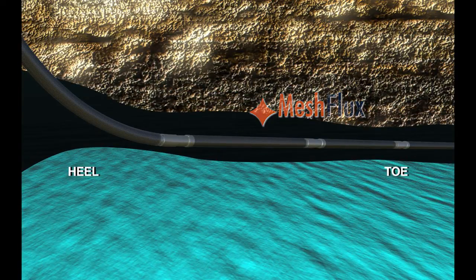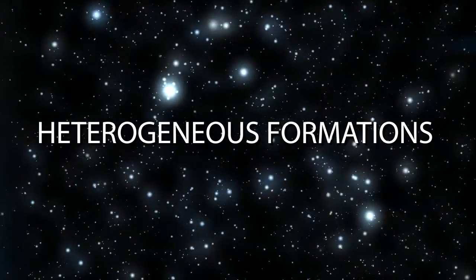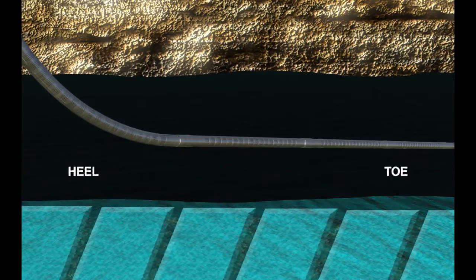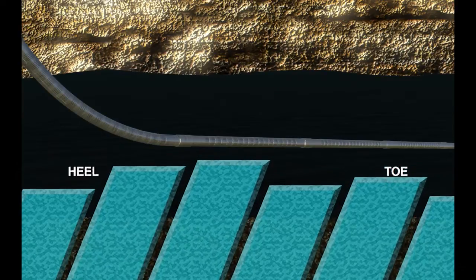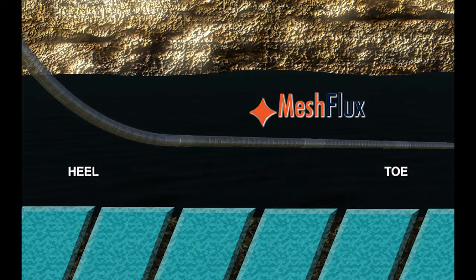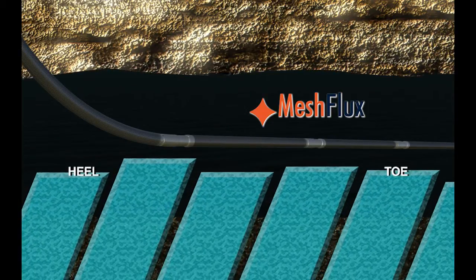Equalizing influx prevents or delays water coning while maximizing production and removing damage at the toe. In heterogeneous formations, ICDs prevent oil from depleting faster in high permeability zones, avoiding premature water breakthrough. Mesh Flux reduces influx from high permeability streaks, offering maximum sweep efficiency and much lower water cuts, resulting in a much higher net present value.